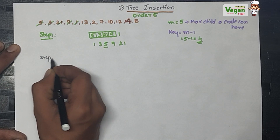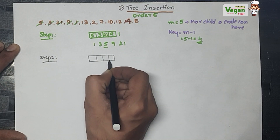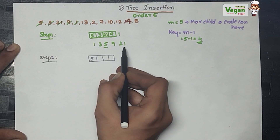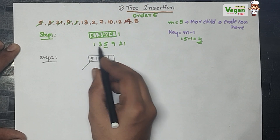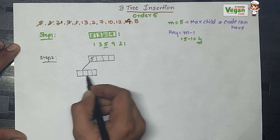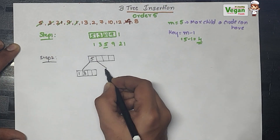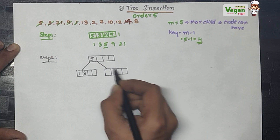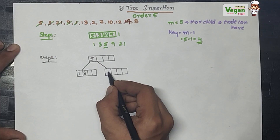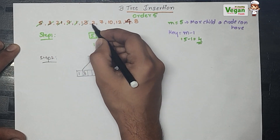In step 2, all nodes will have 4 key spaces. 5 will be taken up and written at the parent level. 1 and 3 are less than 5 so they go to the left child node. 9 and 21 are greater than 5 so they are written as the right child node. Next I must insert 13 — written directly into the right node.